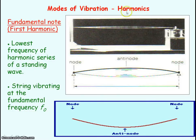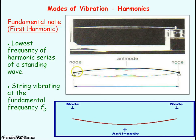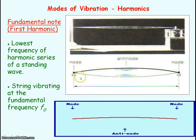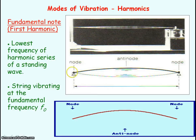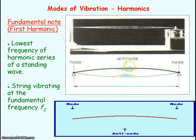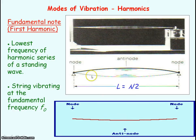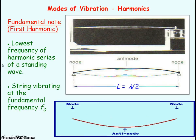Modes of vibration are also known as harmonics — these are standing wave patterns that give you maximum amplitude. The simplest standing wave pattern for a stretched string has one loop, with nodes at each fixed end of the string and an anti-node of maximum amplitude at the centre. The length of the string represents half a wavelength. We say this string is vibrating at its fundamental note or fundamental frequency F₀ — the lowest frequency of a harmonic series.